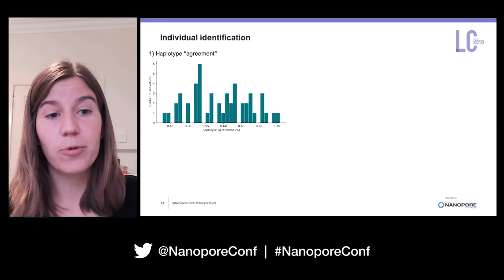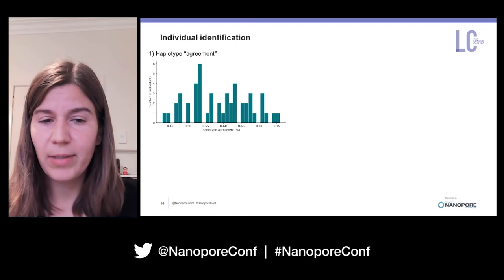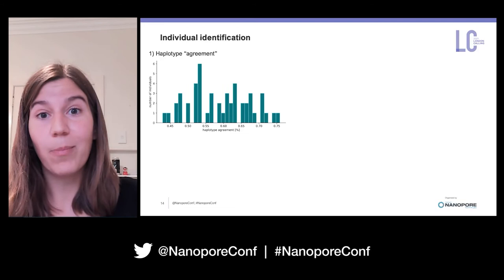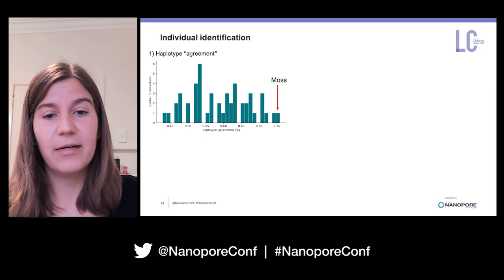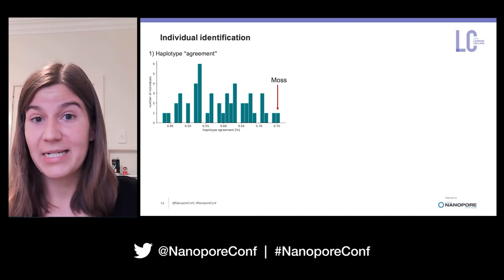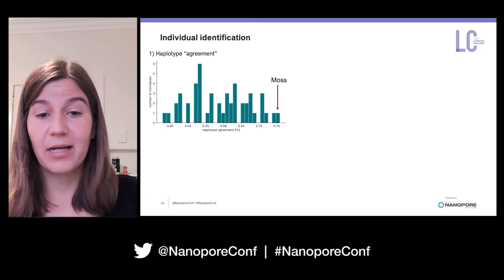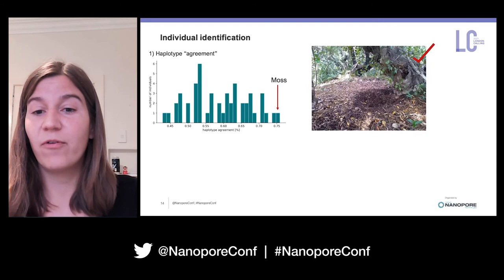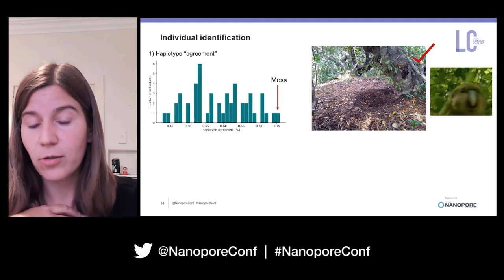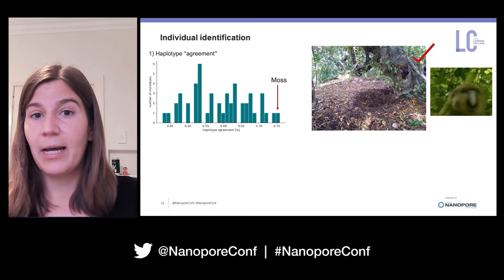Plotting the percentage of agreement of each kakapo individual with the soil haplotype set, the very best hit is the kakapo Moss. I checked back with the metadata collected by the recovery team, which has detailed information about kakapo territories, and I could confirm that this soil sample had been taken from Moss's bowl. To my knowledge, this is the first time that individual identification of a wild animal has been done based on environmental samples.